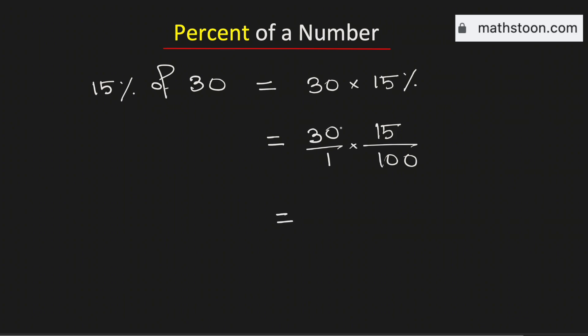Now we know that 30 times 15 is 450, and we have 100 in the denominator. We will cancel the common zero. Therefore, it is equal to 45 over 10, which is equal to 4.5.